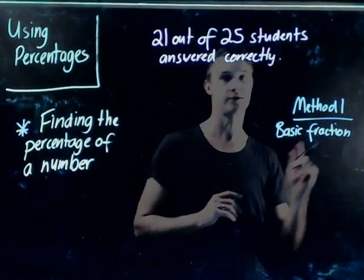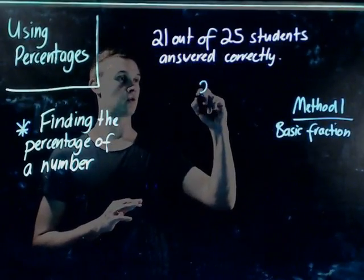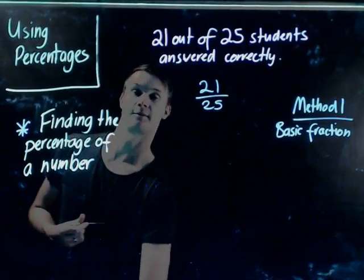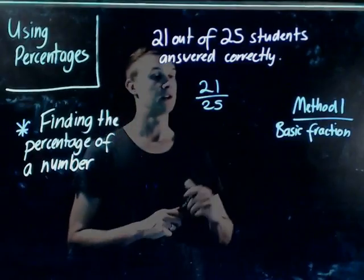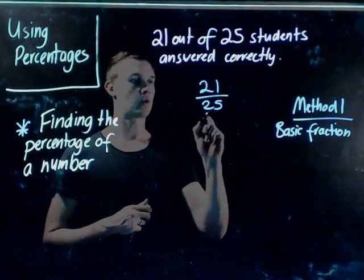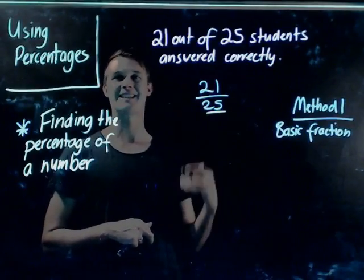So again, like our previous videos, if we could set this up as a fraction, so we have here 21 out of 25 students. Now I know with my fractions that I know that a percentage is out of 100, so is there a way that I can transfer this denominator here to 100, which would make it easier for me to work out a percentage?